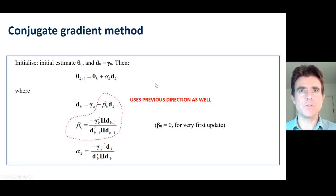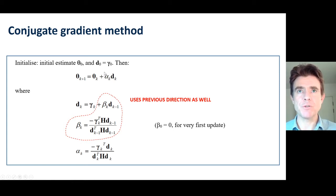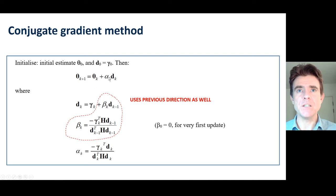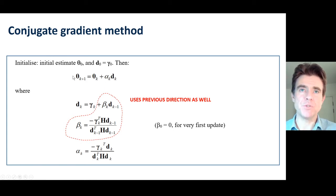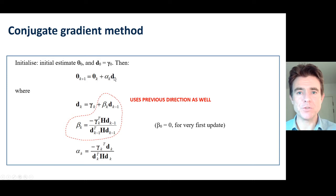Let's see that again mathematically. We start off with position theta zero — that's our reconstructed image. We have an initial search direction, which is just the gradient at that position. Then we get to the new position by adding a search direction with some scalar step size. Initially, the search direction is gamma zero — it's just the gradient. So the first step of conjugate gradient is the same as steepest descent.